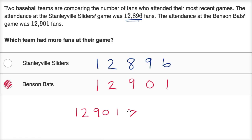I always remember this sign by saying it opens to the larger value. So this is going to be greater than 12,896. And you can even just think about it — just keep counting: 12,896, 12,897, 12,898, 12,899, 12,900, and then 12,901. Let's do another example.